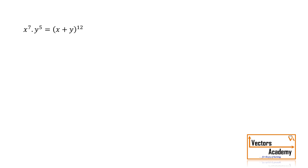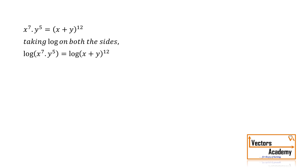The first step is to take log on both sides. Taking log on both sides, we get log of x raised to 7 into y raised to 5, equal to log of x plus y raised to 12. Remember the property: log of a into b is log a plus log b.